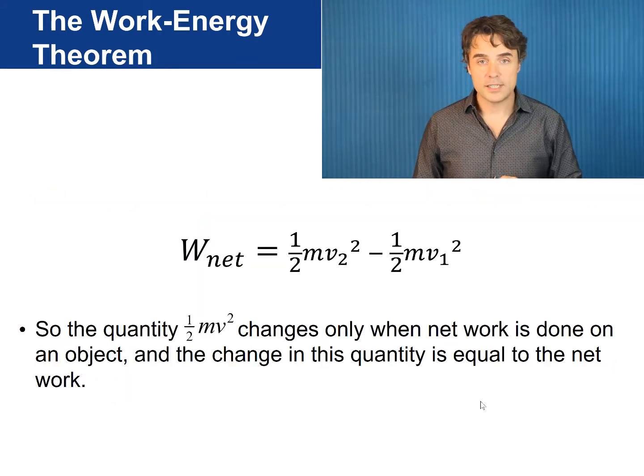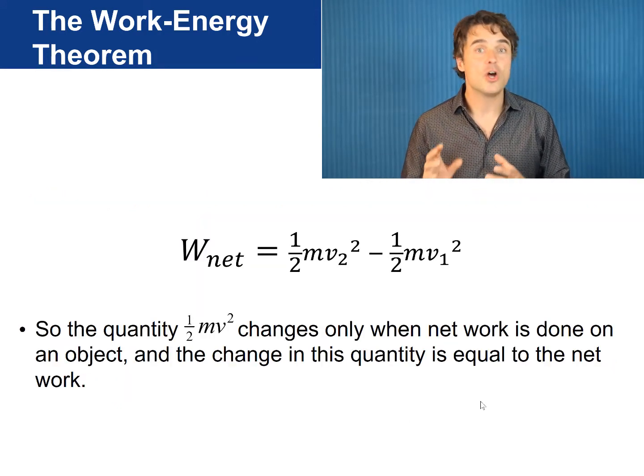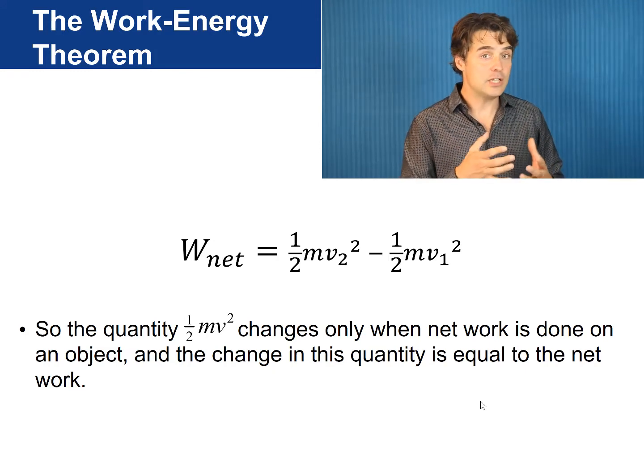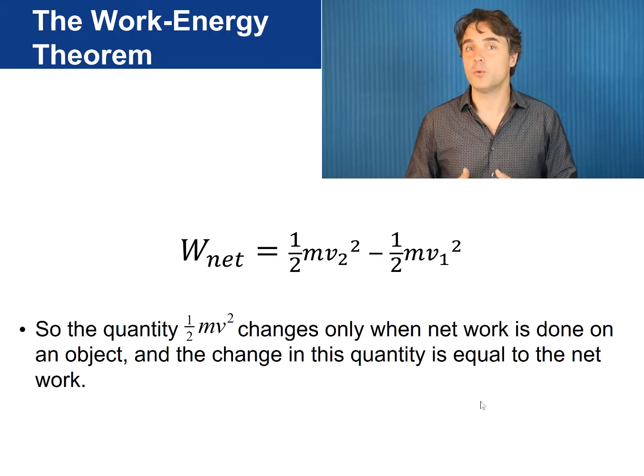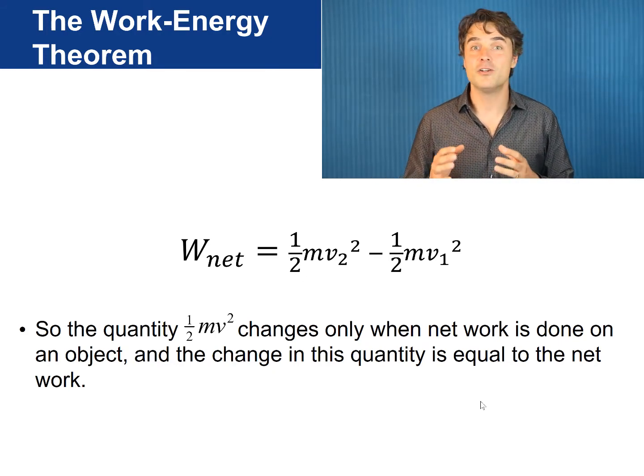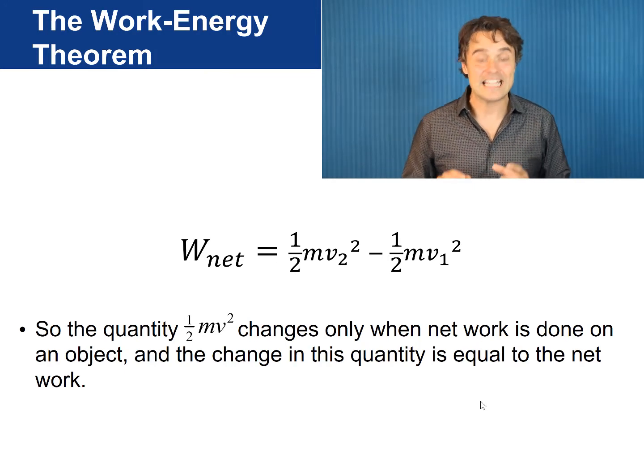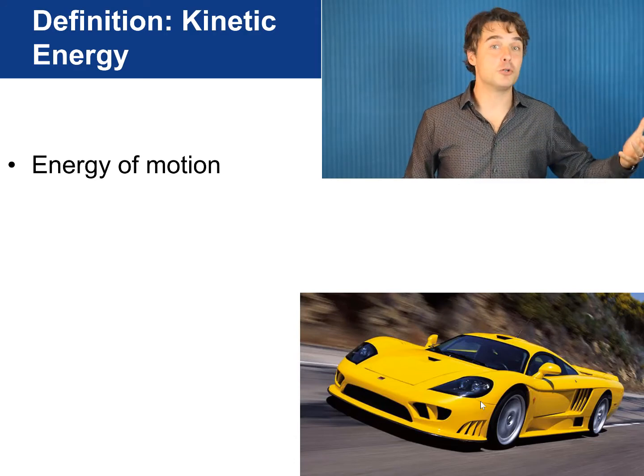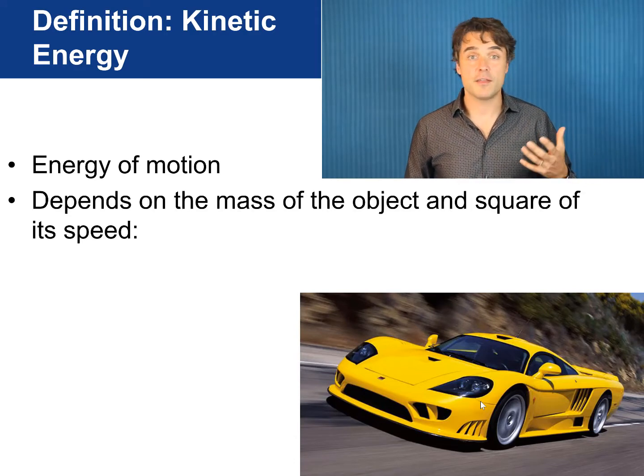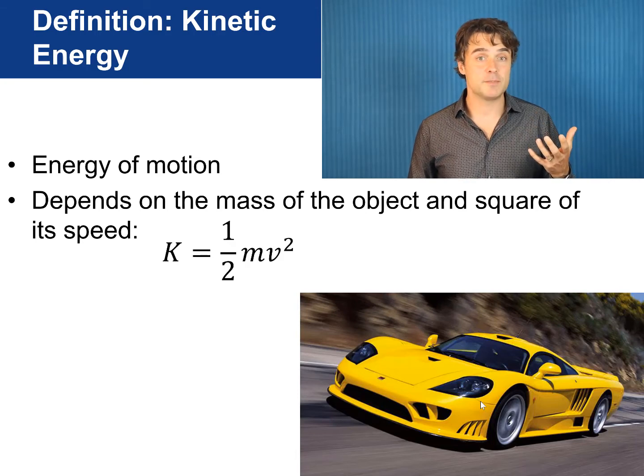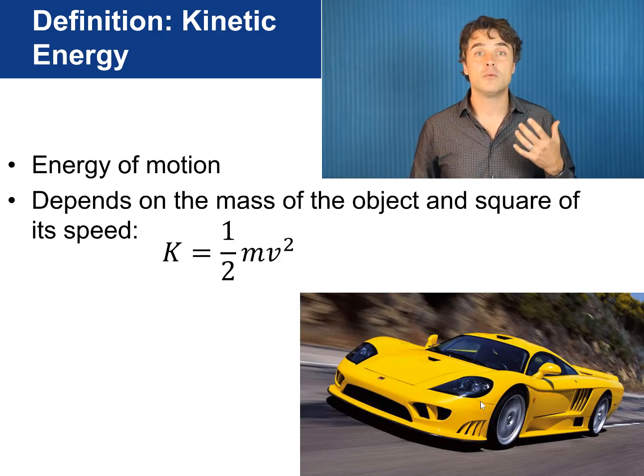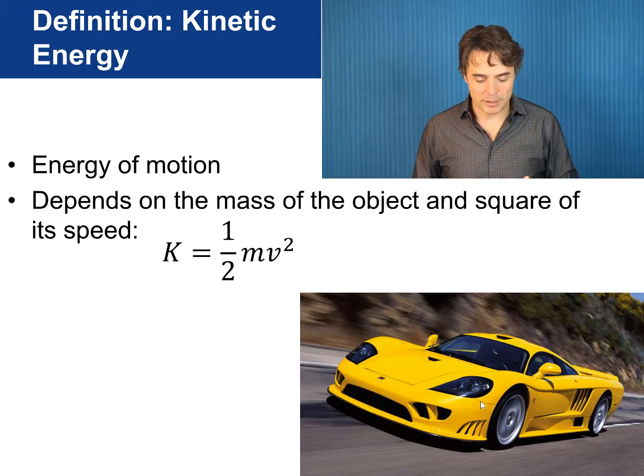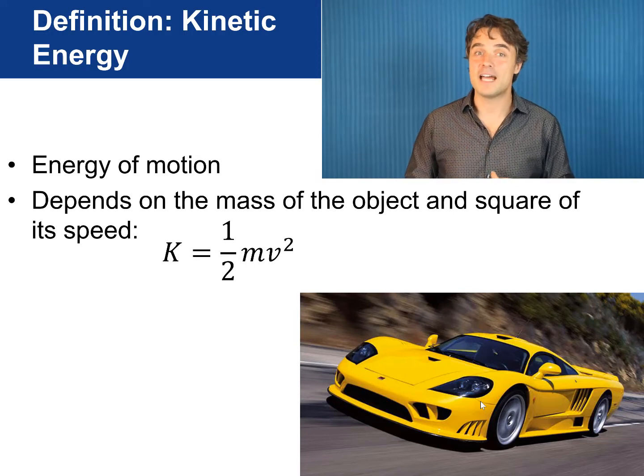So, the quantity 1 half m v squared changes only when net work is done on an object. And the change in this quantity is equal to the net work. This leads us to define a new quantity called kinetic energy using this equation. Kinetic energy is the energy of motion. It depends on the mass of the object and the square of the speed. We will call this quantity k. And there's that equation we derived from the previous slide. k equals 1 half m v squared.